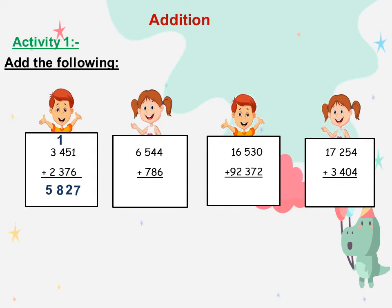The next question: 6,544 plus 786. The first: ones with ones. 4 plus 6 equals 10, so we will write 0 and carry up 1. 1 plus 4 is 5. 5 plus 8 is 13, so we will write 3 and carry up 1.